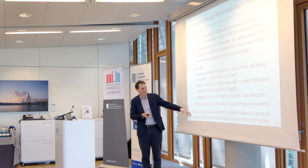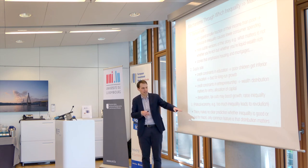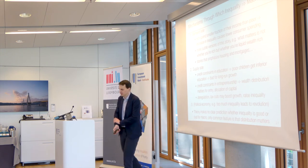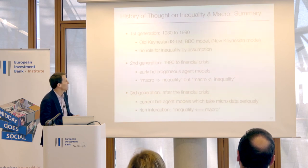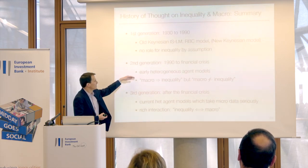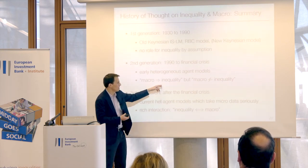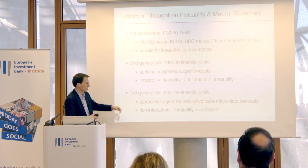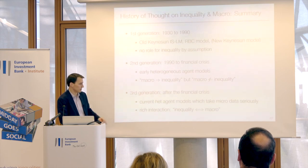The general thing I want to get across is that theory makes no clear prediction whether inequality is good or bad for macro — what matters is that the distribution matters. To summarize the intellectual history: first generation models from 1930–1990 had no role for inequality by assumption; second generation models from 1990 had a distribution but only a one-way street from macro to inequality, not the other way; and now we have richer models with a genuine two-way interaction between inequality and macro, which I'll illustrate with monetary policy.